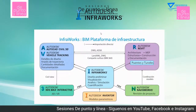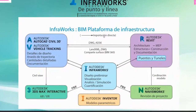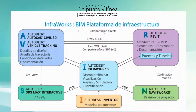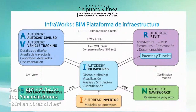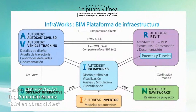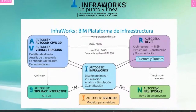En la siguiente lámina tenemos, de manera resumida, cuál es la relación o cuál es la forma de trabajar en un modelo de InfraWorks. Tú puedes tener proyectos en InfraWorks a partir de Civil 3D y enviarlos a InfraWorks. También puedes tener proyectos hechos en Revit y también modelarlos en InfraWorks. Lo que es 3D Max nos sirve para la parte de animación en la herramienta que se llama Civil View. Para que los elementos en InfraWorks sean paramétricos, tienes que utilizar Autodesk Inventor y en NavisWorks puedes hacer la simulación.